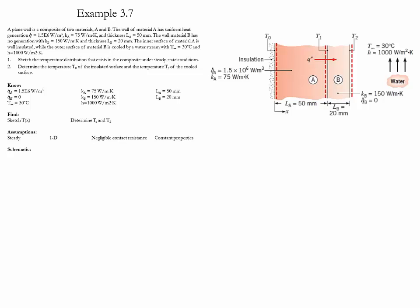Example 3.7. In this example, a plain wall is composed of two materials, A and B. The thickness and the thermoconductivity of both materials is given. Material A has a uniform heat generation, while material B has no heat generation. The inner surface of material A is well insulated, while the outer surface of material B is cooled by water.